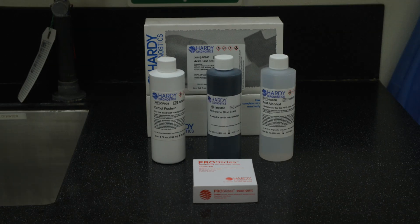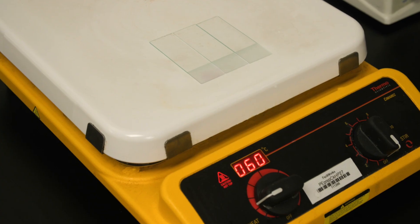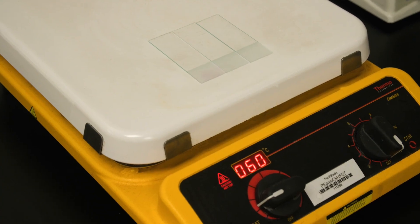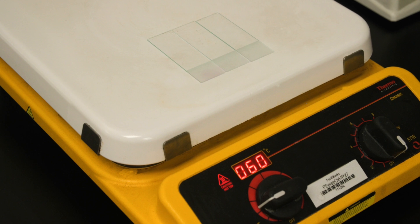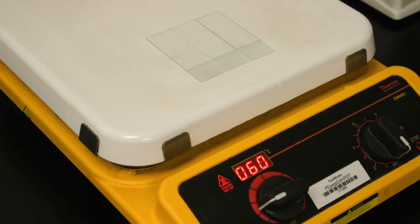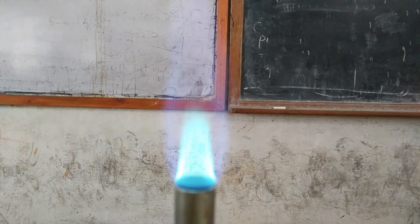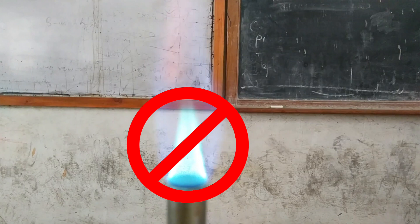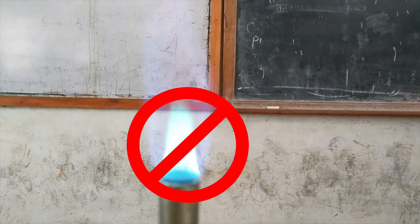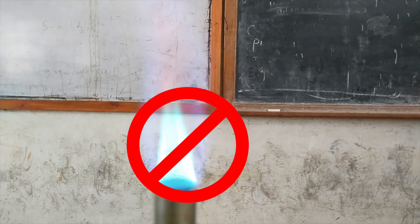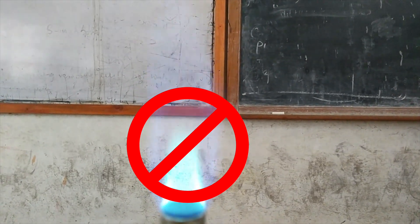Before beginning the acid-fast stain test, have your materials prepared on a disinfected surface. You can effectively heat fix your slide by placing it on a 60-degree centrifuge heat block for about two minutes. Using a flame is not recommended since the excessive heat will distort the cells.